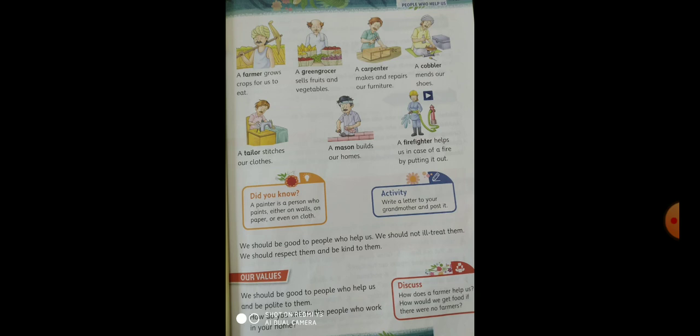A cobbler mends our shoes. A tailor stitches our clothes — the different clothes we wear, like pants, shirt, frocks, and dresses are stitched by a tailor. Mason — what does a mason do? He builds our homes. In this picture, can you see the work done by a mason?